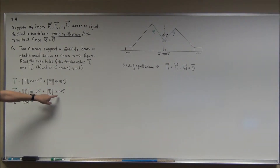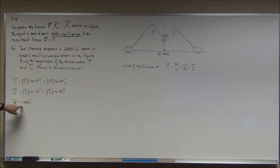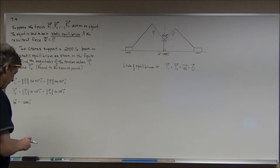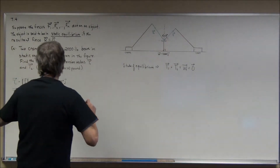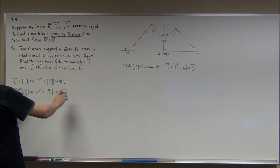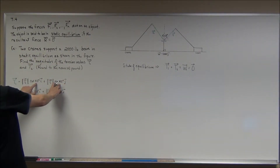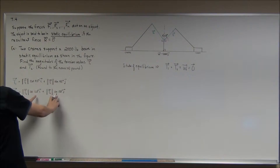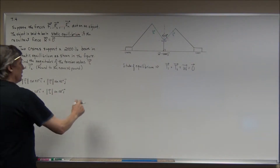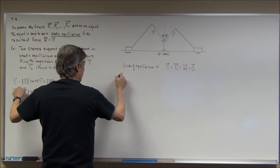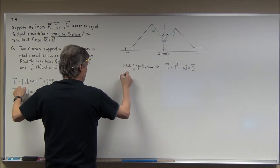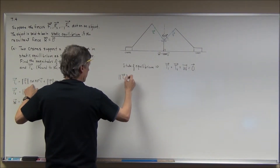I've written them out in component form, and W is negative 2,000 times vector j. If I add up these three vectors, I'm going to go ahead and plug in the values from my unit circle. For T sub 1, I have its magnitude times the cosine, which is the square root of 2 over 2, times vector i.